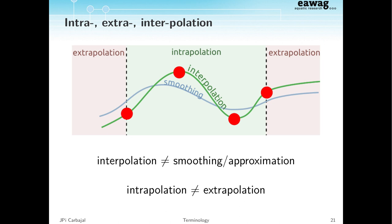Interpolation is contrary to smoothing or approximation, but it's not contrary to extrapolation. As you see here, I have an interpolant and use it to extrapolate — usually a bad idea, but you could do it. You can use your interpolant to predict values outside the range of observed data, and that's extrapolation.